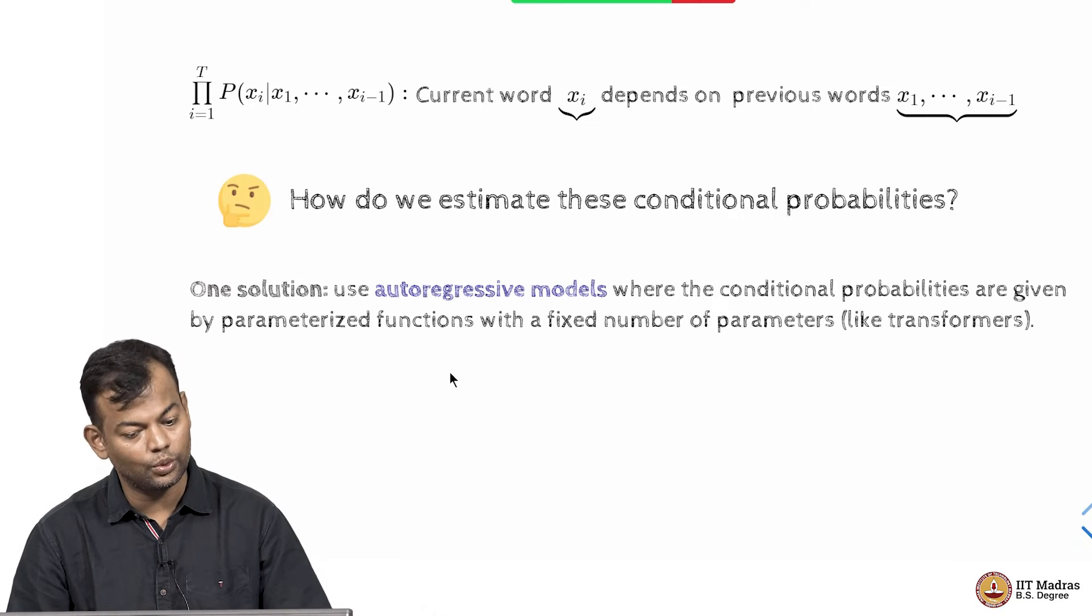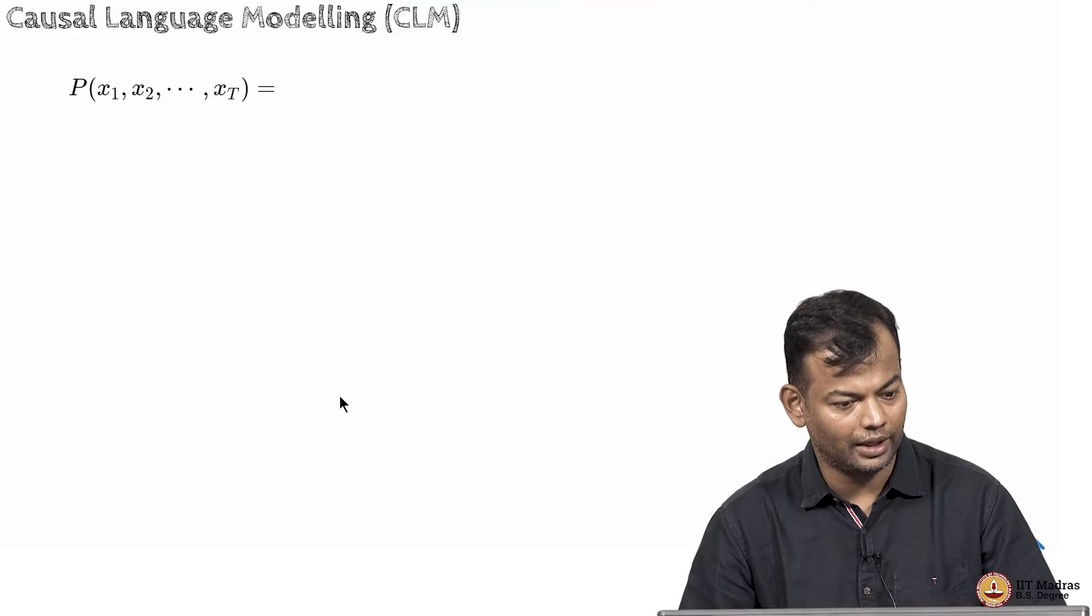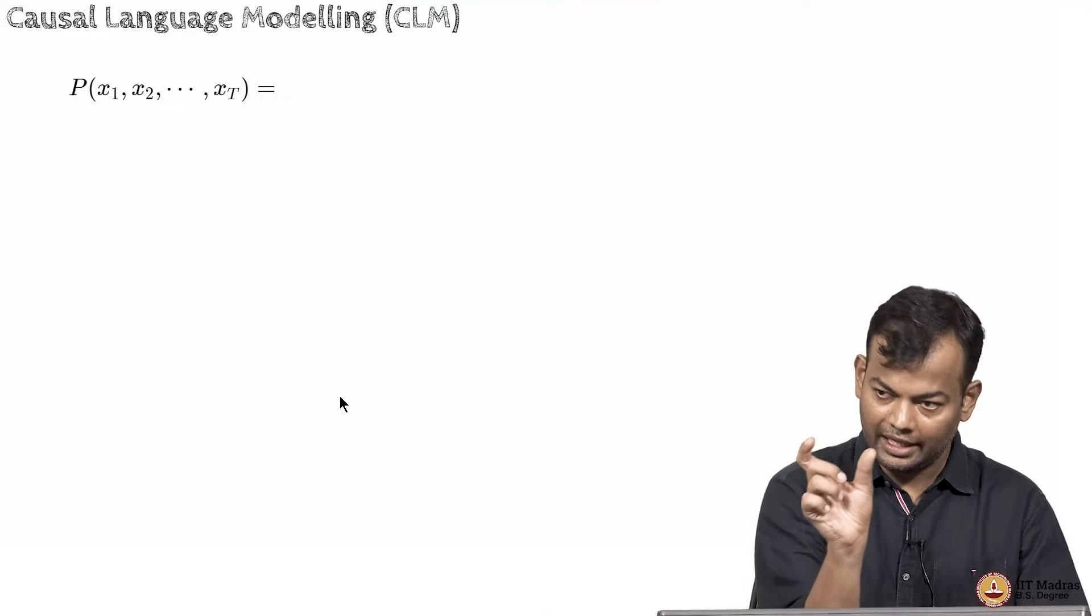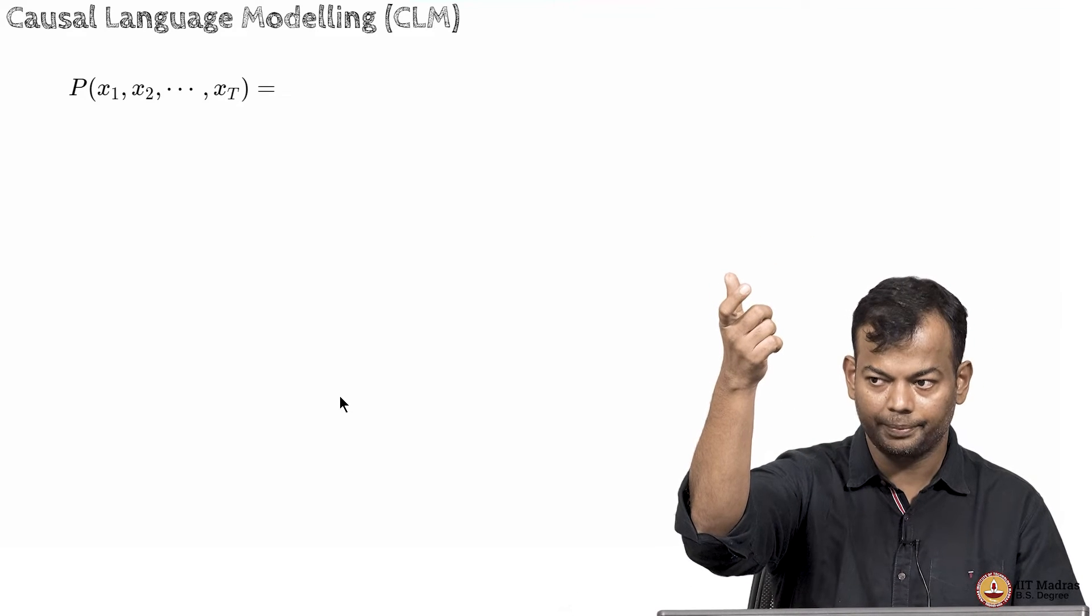So, yes you can use a transformer architecture to do that. So, what we are interested in is known as causal language modeling, where you are given the input sequence and you want to predict the next word. Okay?